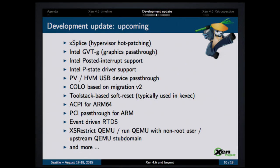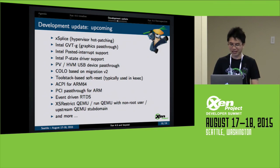Some interesting upcoming items: XSplice, which is about hypervisor hot patching. There are also some other Intel features such as graphics pass-through, posted-interrupt support, and P-state driver. There are also PV and HVM USB device pass-through and cold-load-based migration V2 and other things. If you're interested in knowing any of them, just talk to me after this talk and I'll try my best to explain them.